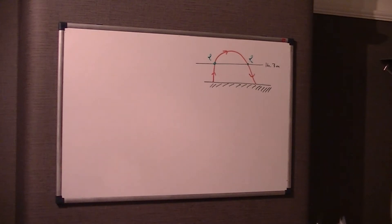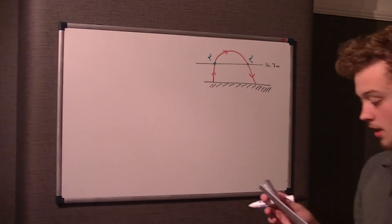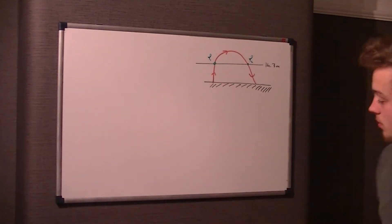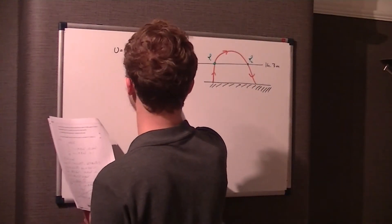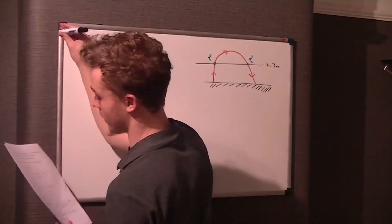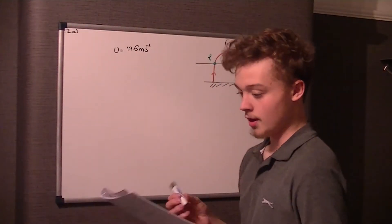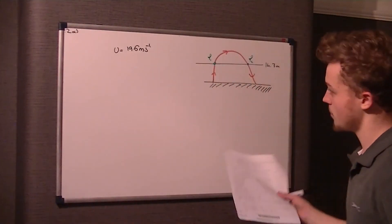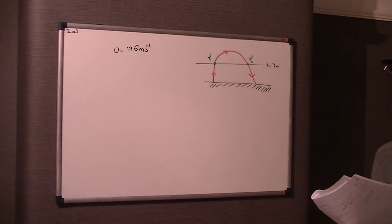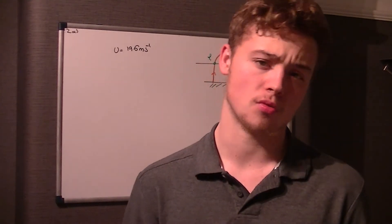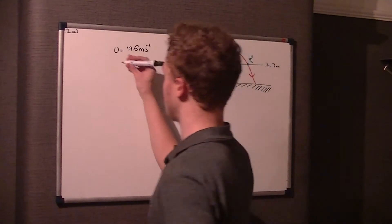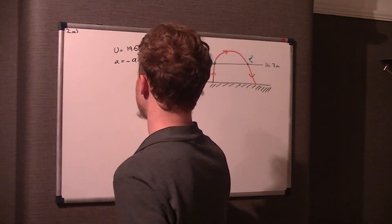The first question is quite a nice one. So we're told the stone is projected upwards from 0,0, with a speed of 19.6 meters per second. So U is equal to 19.6 meters per second. Now when it's thrown up, clearly things should be sprouting out in your head straight away. When it's been thrown up or falling down, we use acceleration to be 9.8. Whether it's positive or negative dictates whether it's been thrown up or dropped. So because it's been thrown up, we say the acceleration is negative 9.8 meters per second squared.